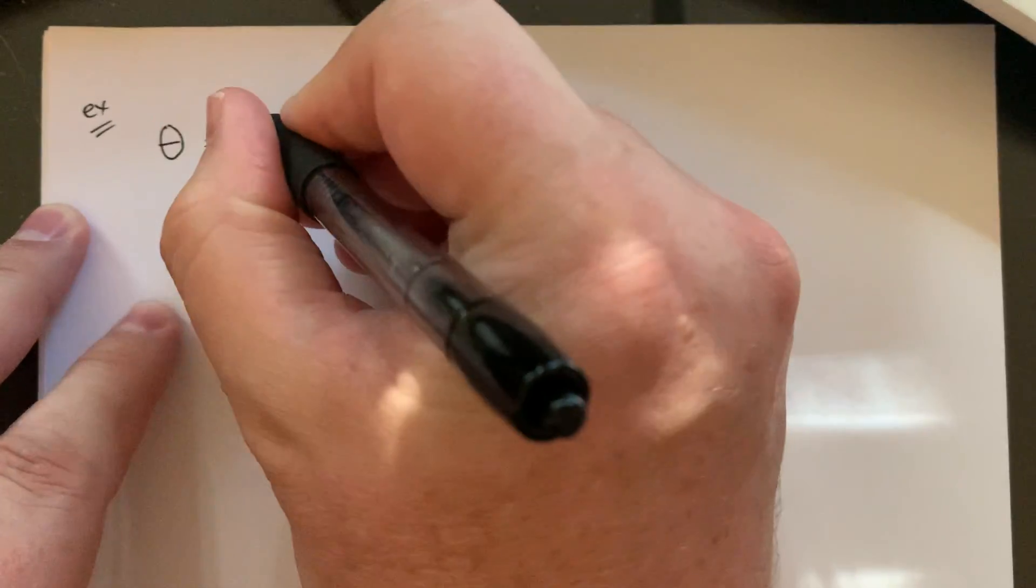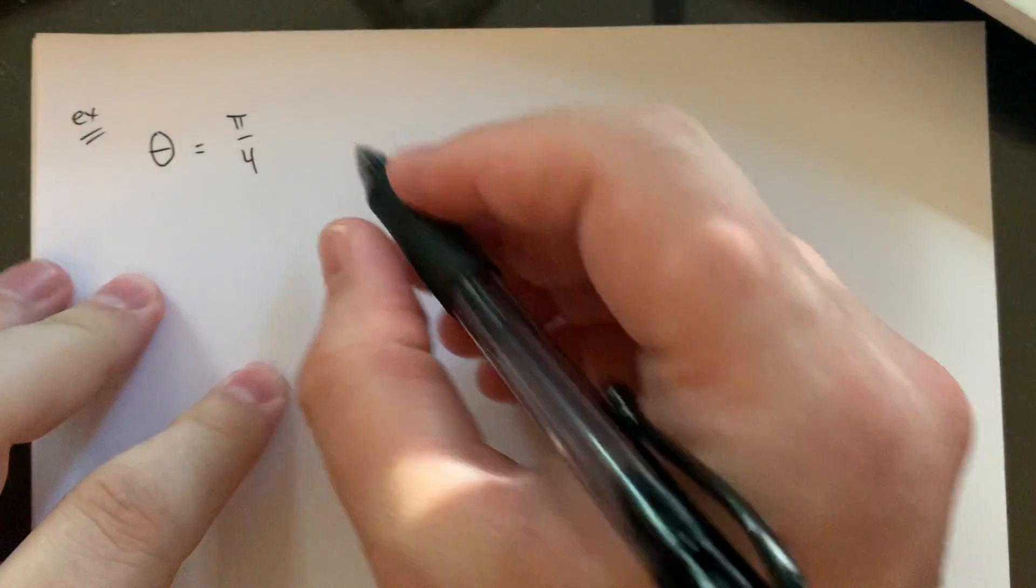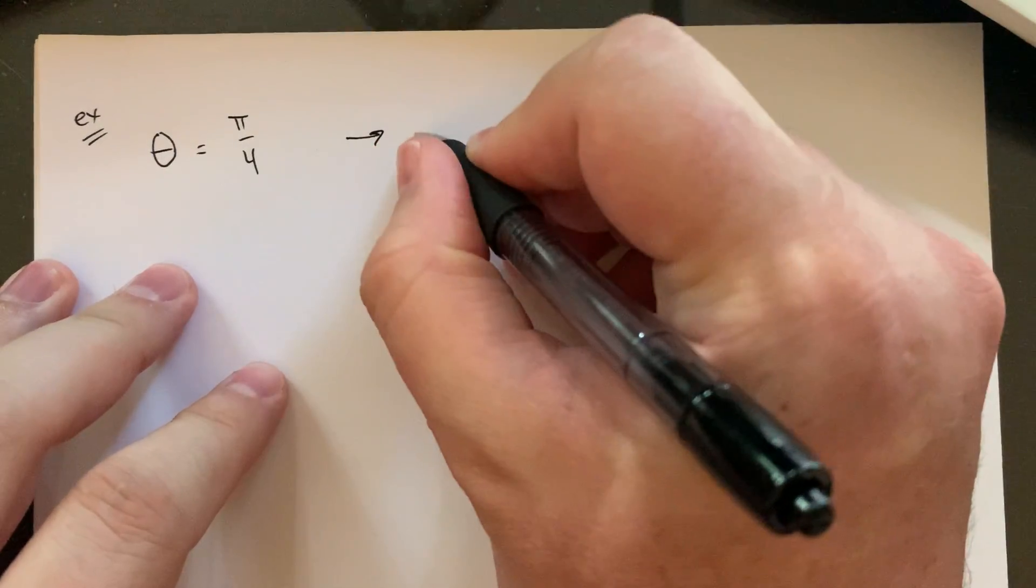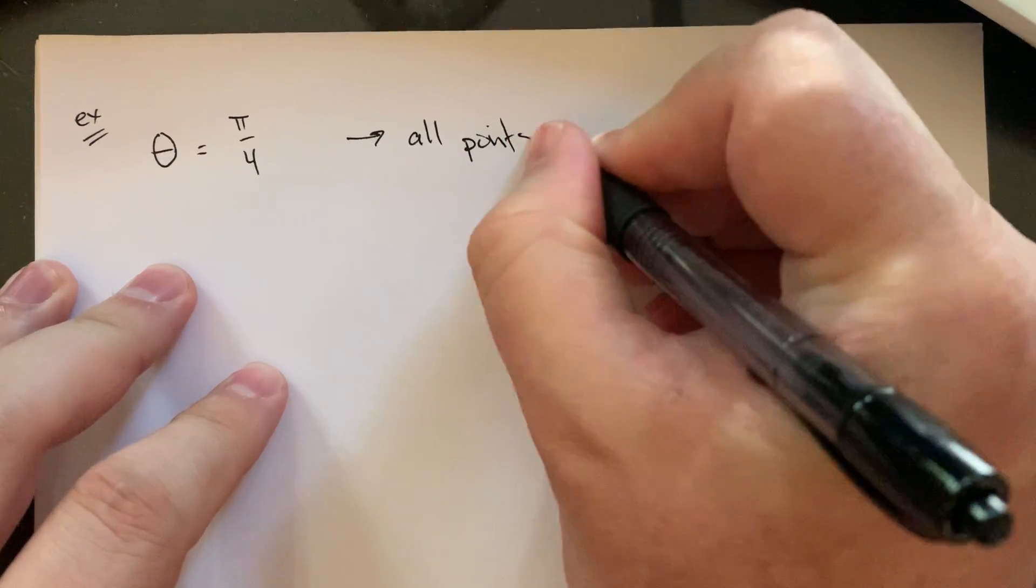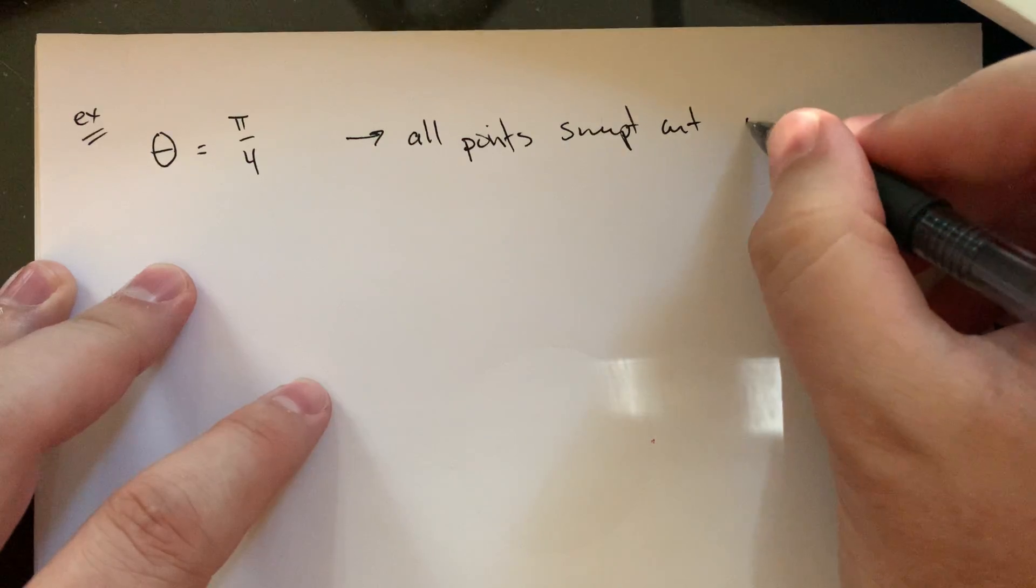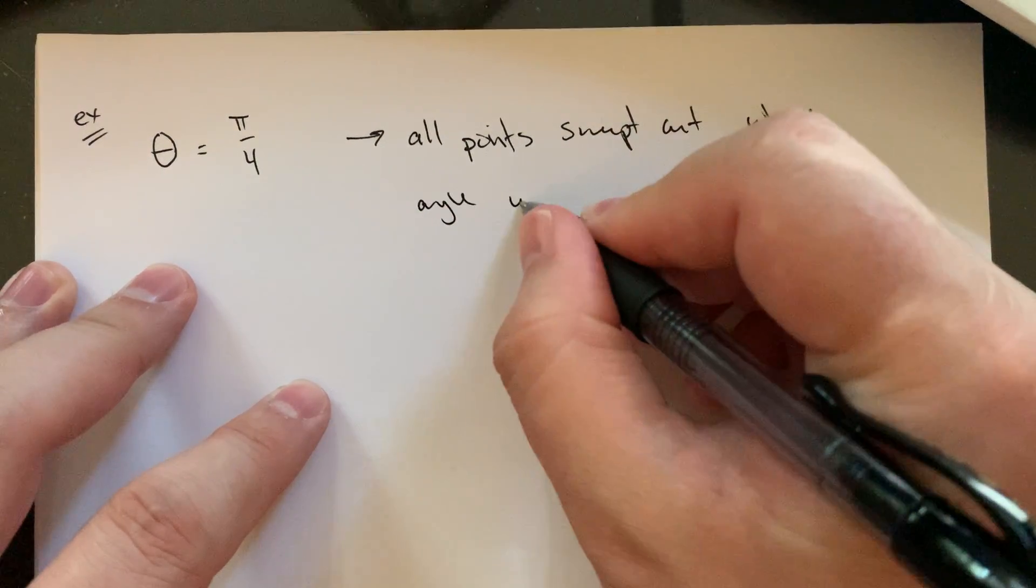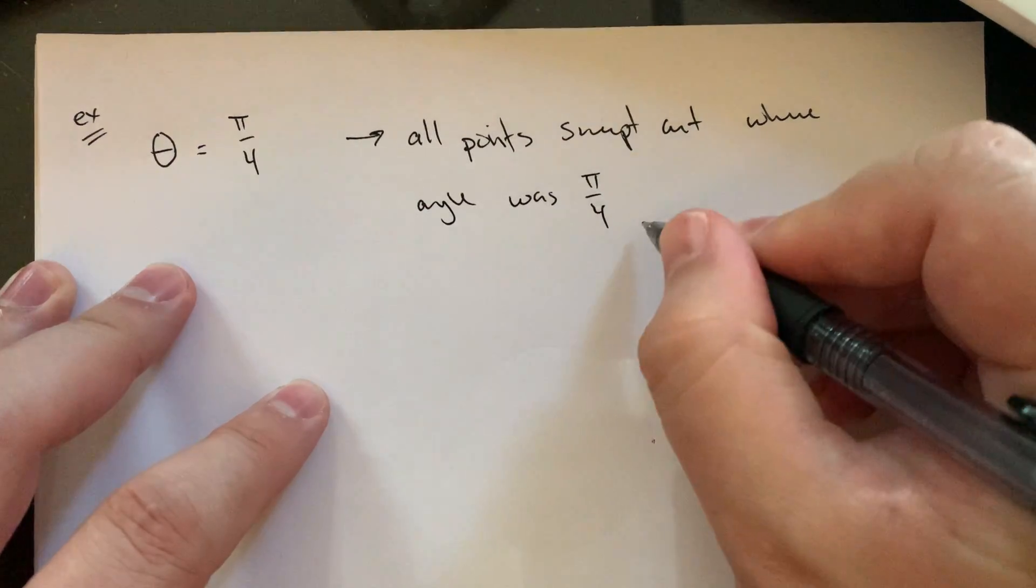If you did, let's sort of stick with our polar. What if I did something like theta equals, let's just do something kind of nice, like pi over four. Okay, so what does that mean?